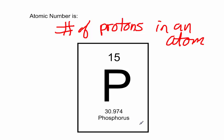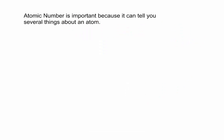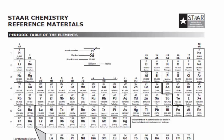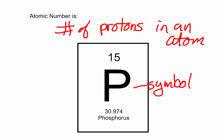If you look at a periodic table, you're going to see it's usually arranged with a large chemical symbol in the middle, and then usually you have the atomic number on top. If you look on a periodic table, you're usually going to find that somewhere they have a key that's going to tell you where the atomic number is. So this right here, in this case, is the atomic number — so phosphorus has 15 protons.